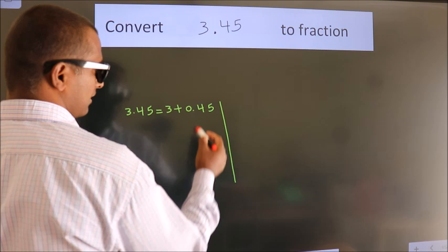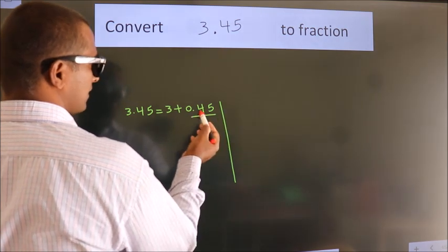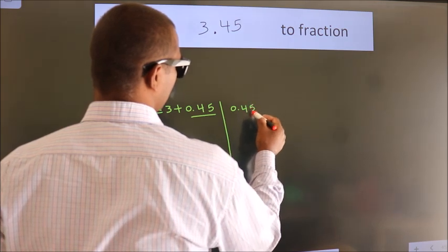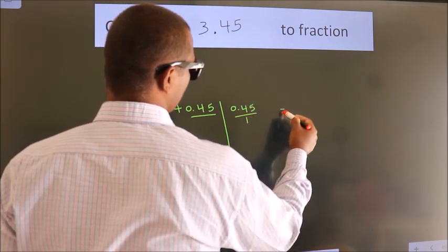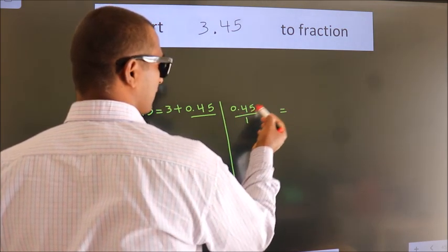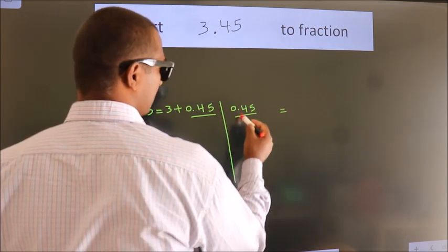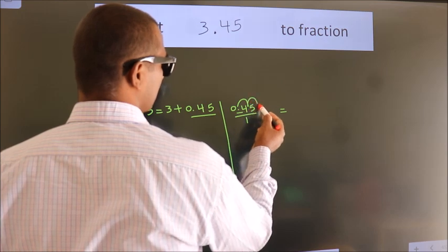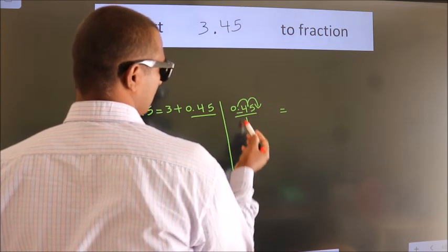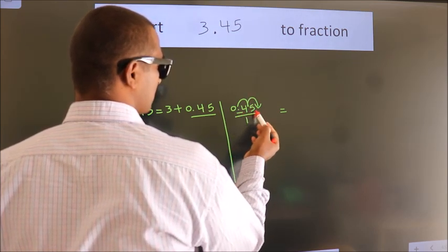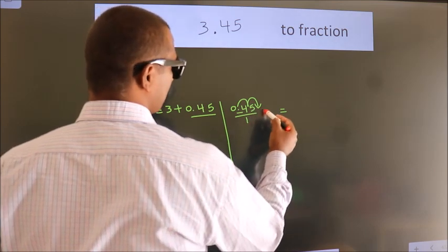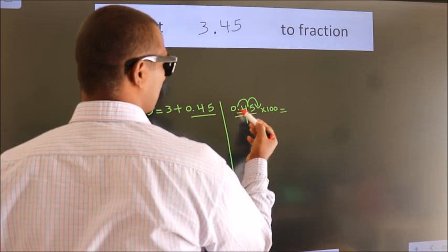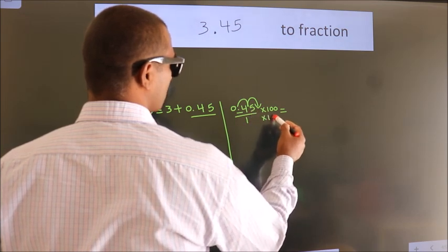Next convert this to fraction over here. So 0.45. To convert this to fraction, we have to move this decimal after 1, 2 numbers. To move this decimal after 2 numbers, multiply it with 100. Whatever we are multiplying in the numerator, in the denominator also do the same.